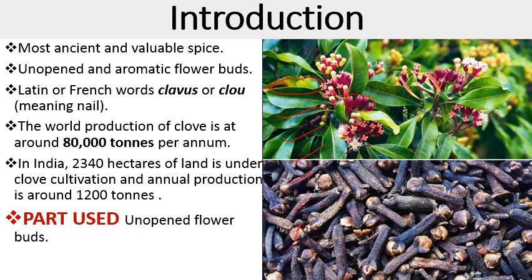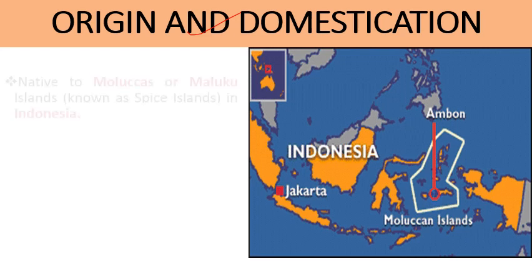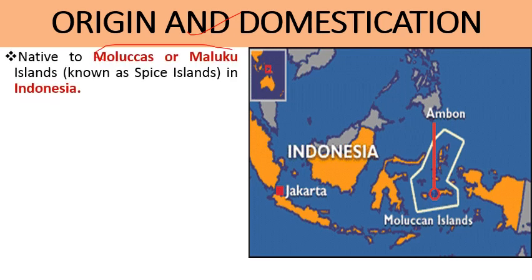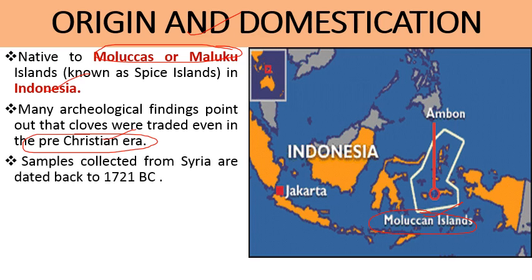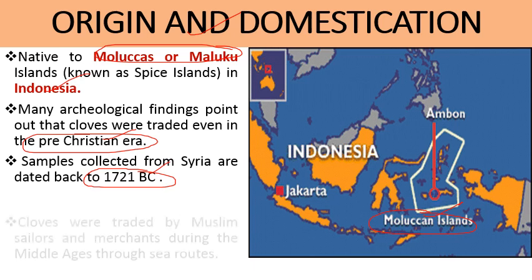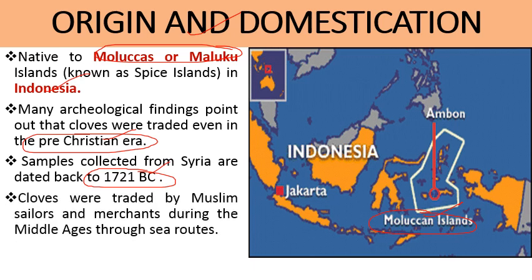Regarding origin and domestication, clove is native to the Maluku (Moluccas) islands of Indonesia - this is considered its origin. There are many archaeological findings indicating that cloves were traded even in the pre-Christian era, with samples collected from Syria dated back to 1721 BC. Cloves were also traded by Muslim sailors and merchants during the Middle Ages through sea routes.